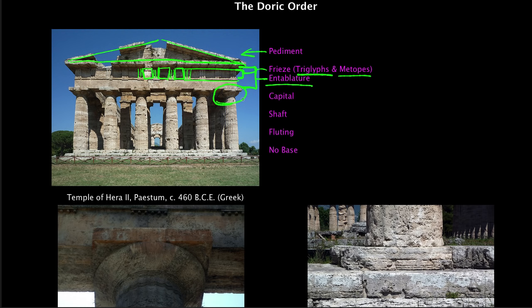We think the triglyphs probably came from a time when temples were built out of wood — these would have been the ends of planks functioning as beams, supported directly over the columns. You'll notice that every other one is aligned directly over the columns. Moving down the temple, the next area is the capital. The Doric capital is very simple — a flare and then a simple slab on top. It's the oldest, most severe, and was associated by Vitruvius with masculine form: broad, not tall, and heavy feeling.